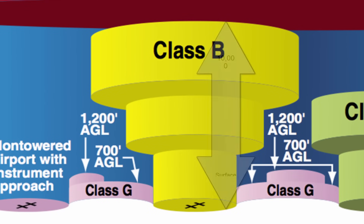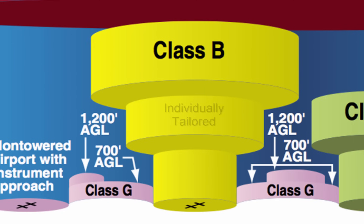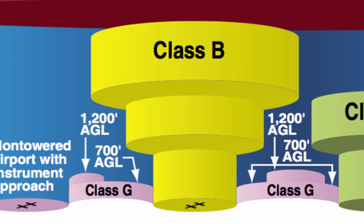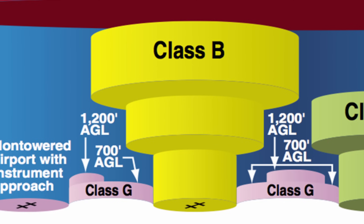Class B airspace is generally located from the surface up to 10,000 feet above sea level, and it surrounds the nation's largest airports. Each Class B airspace is individually tailored based on the needs of the airport or airports in and around them. All Class B airspaces are made from the surface and two or more airspace regions. As shown in the picture above, Class B airspace resembles an upside-down wedding cake. All pilots must have air traffic control's permission to operate in the area.